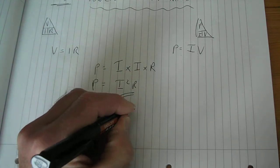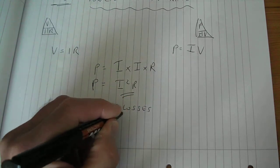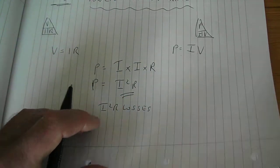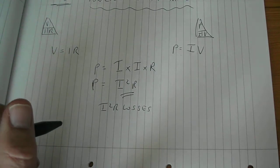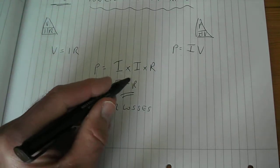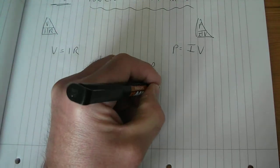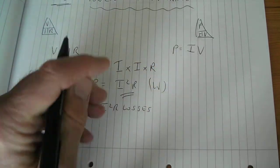And we often talk about things like I squared R losses in situations in circuits. If you hear someone talk about the I squared R losses, you now know what they're talking about. So power equals I squared R, and the unit is the watt, as you should remember from your 662 course.